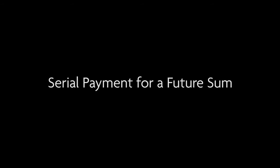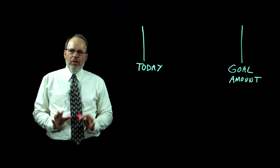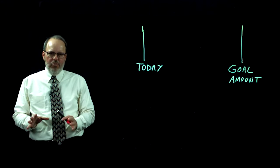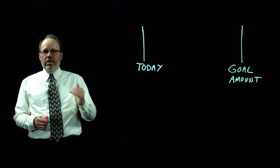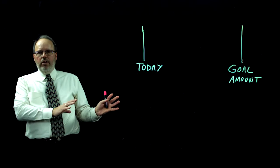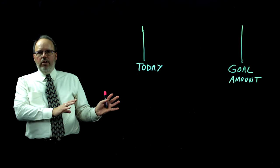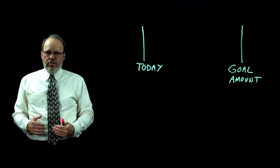Next we'll look at a serial payment calculation for a future sum. Serial payment simply means we're adjusting the payment each year for inflation, as opposed to a level payment, which is the same every year. When we did the retirement income scenario, we used a serial payment in step two to maintain buying power throughout retirement. Now we're looking at saving towards a goal amount.